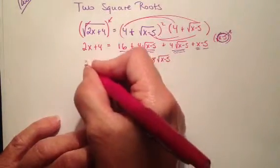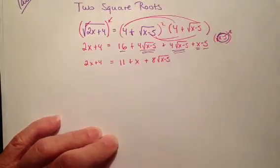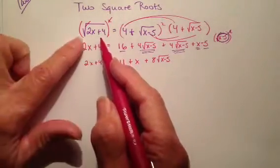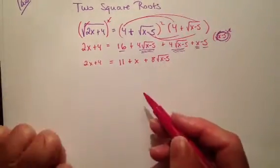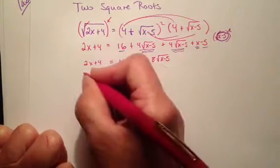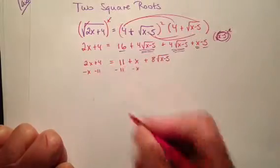This side didn't change at all, 2x plus 4. So now what I can do is I remember at the beginning I wanted to have this square root by itself. So I can simply minus 11 and minus x from both sides.